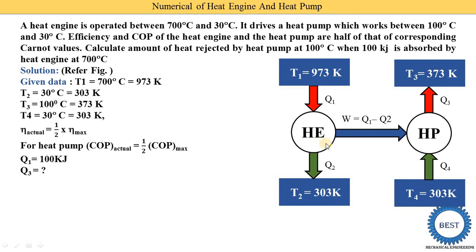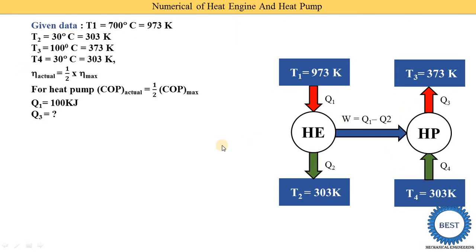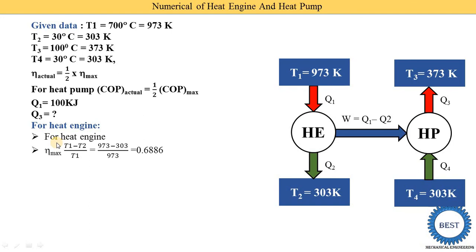First we find the efficiency of the heat engine, then Q2 and W, and then all parameters for the heat pump. We solve the heat engine first: the Carnot efficiency is (T1 minus T2) divided by T1. Putting T1 = 973 and T2 = 303, we get the Carnot efficiency as 0.6886. This is the maximum efficiency.